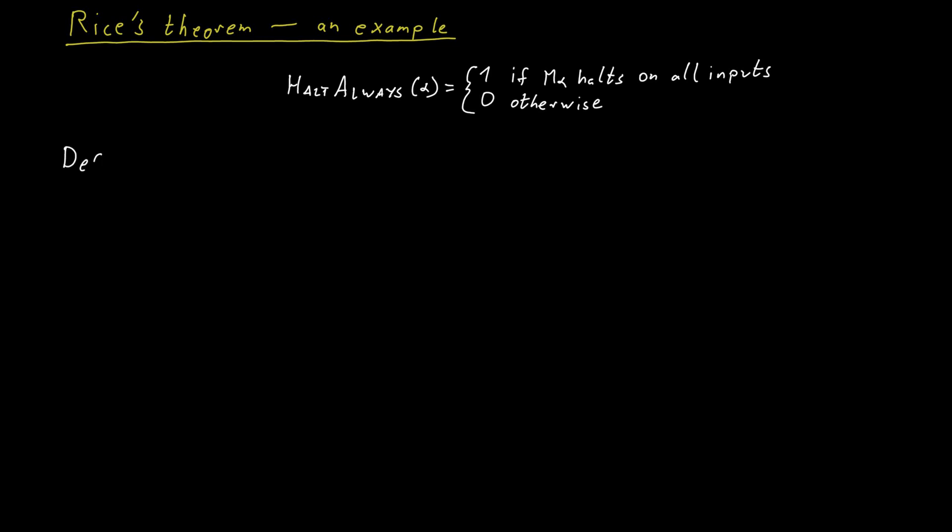In this case, we take C as the set of all functions in R that do not map any input X to the bottom symbol. Because those are the functions that correspond to Turing machines which always halt.